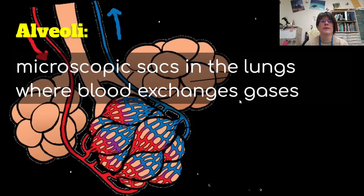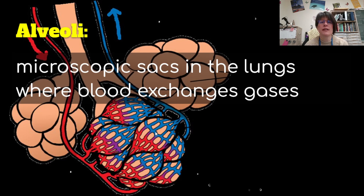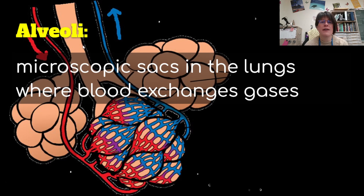The lungs are where gas exchange takes place, and that takes place in what are called the alveoli — microscopic sacs in the lungs where blood exchanges gases. These are very tiny and look like bunches of grapes. They are covered with blood vessels called capillaries. The blue ones have a lot of carbon dioxide in the blood that's going to be released, and the red ones are where oxygen goes in to be carried to the rest of the body.